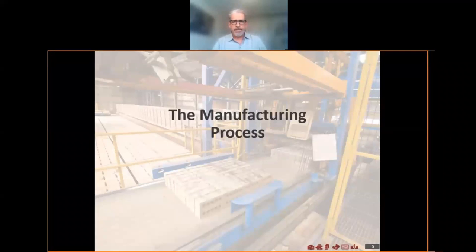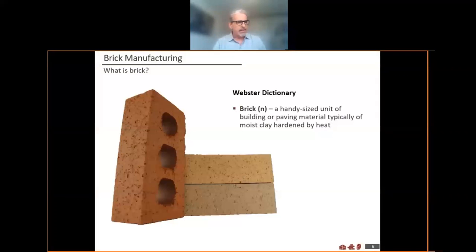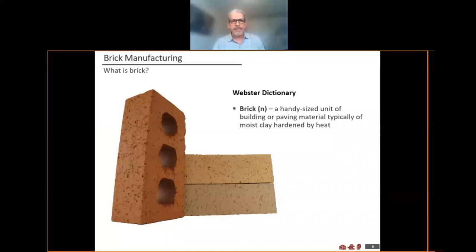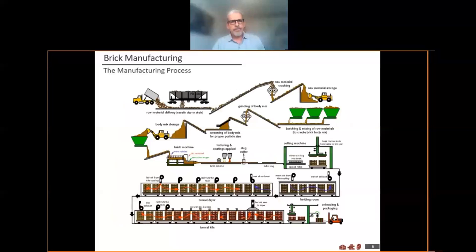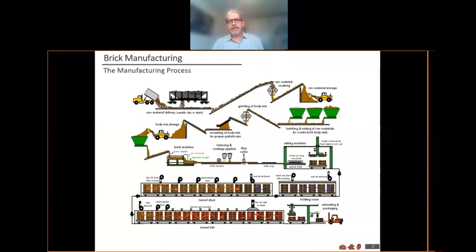First, we look at the manufacturing process. It hasn't changed a lot over the years — a brick has largely stayed a brick. Mostly what's changed is the way that it gets fired and how quickly and efficiently that can happen. On the diagram you can see the basics. We start with the raw material, which is either clay or shale, depending on the region and the deposit you're working from.